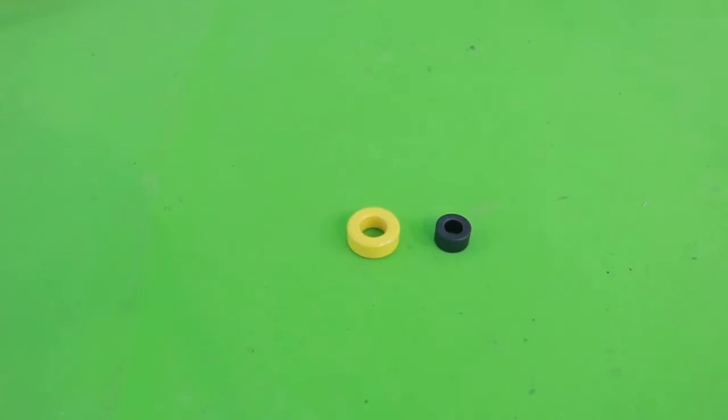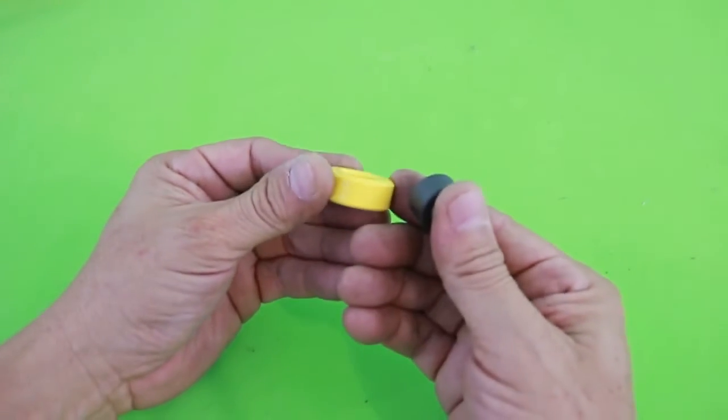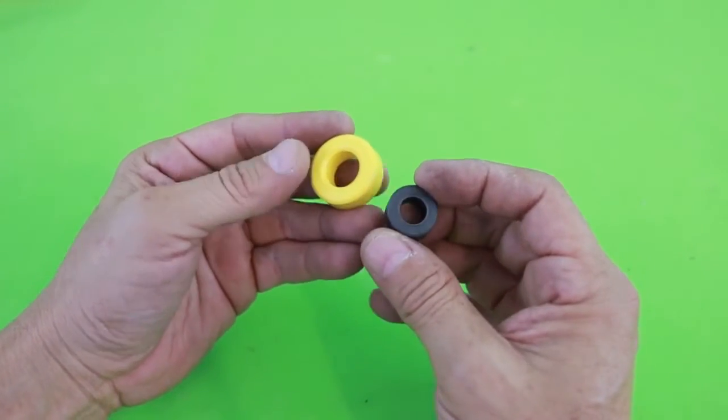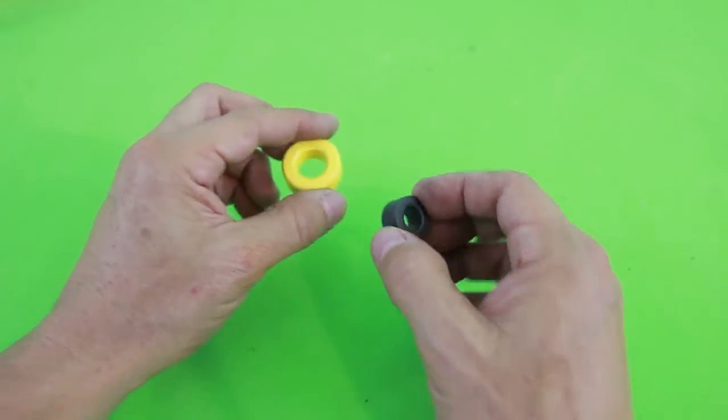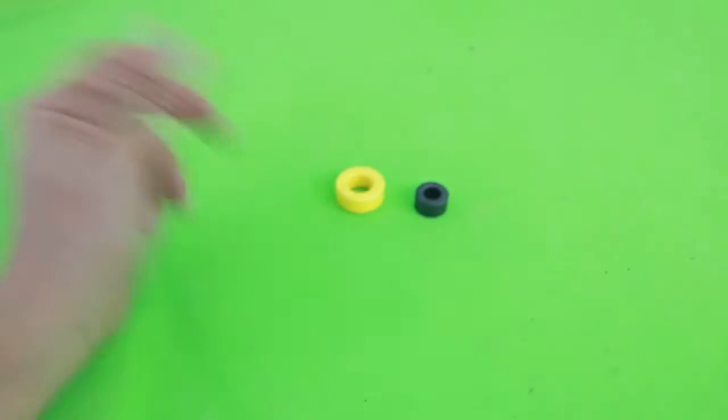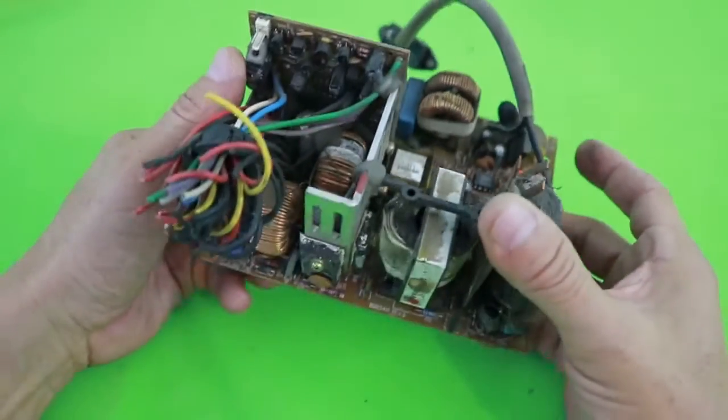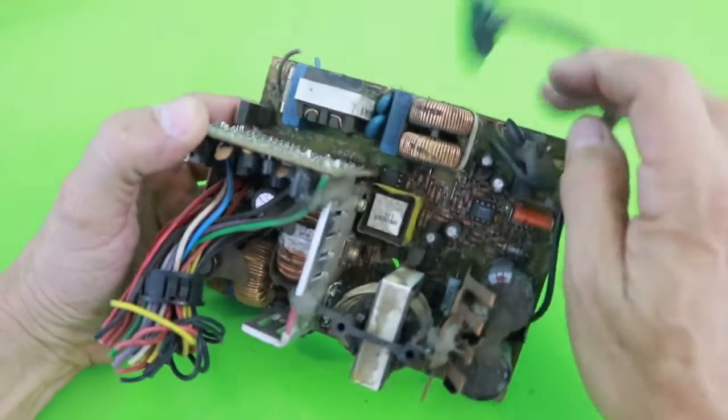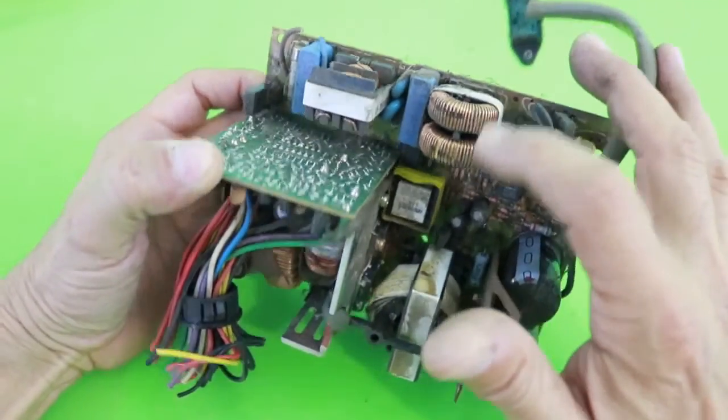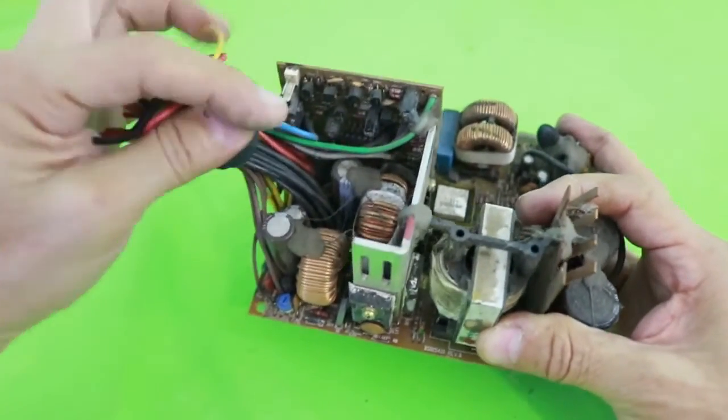In order to make the inductor, we need a ferrite core such as these ones. It doesn't have to be a particular size or material. Any core will do the job, and you can get it from many electronic devices. For example, this old PC power supply. You can see two cores here, and here we have two larger ones.